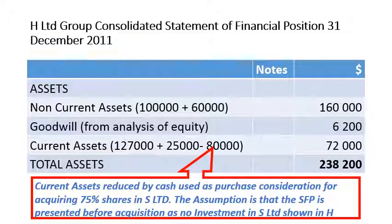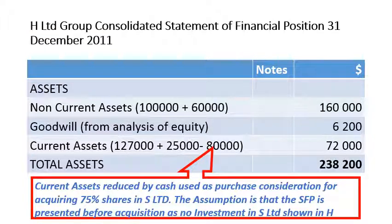Property, plant and equipment of H Limited is added together with property, plant and equipment of S Limited, line by line. We recognize goodwill from the analysis of equity after eliminating the investment in the subsidiary and also eliminating the equity of the subsidiary — these are intergroup transactions dealt with separately. For current assets, we add H Limited's amount to S Limited's $25,000, then subtract the $80,000 cash used to purchase S Limited's shares, since the investment in S Limited entry has not yet been adjusted on the statement of financial position.